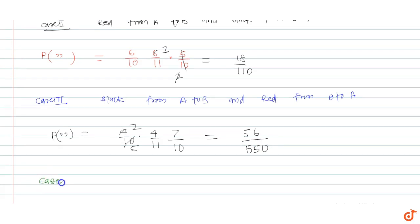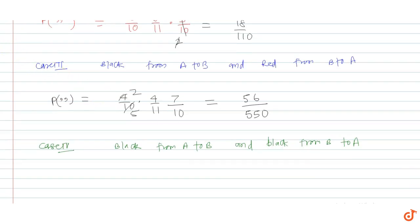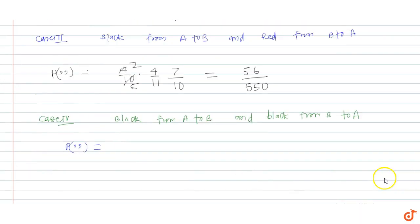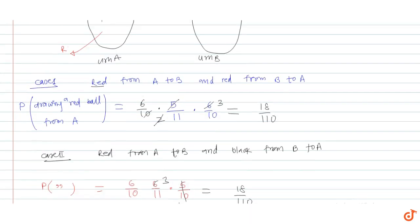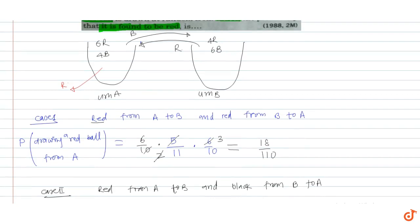One more case exists — Case 4: black from A to B and black from B back to A. The probability of black leaving A is 4 by 10. After adding one black to B, there are 7 blacks in B so probability of black from B is 7 by 11. After this transfer, one black was decreased from A and then one black returned, so the composition of A is restored.